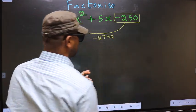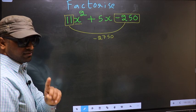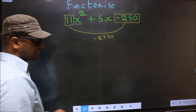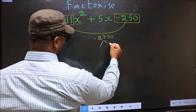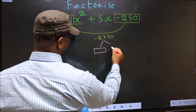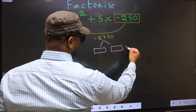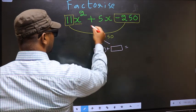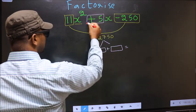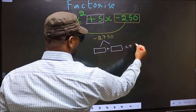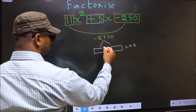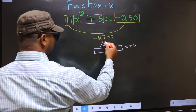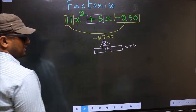This is your step 1. Next, now you should look out for two numbers such that when you add these two numbers you should get middle coefficient +5, and also when multiplied you should get -2750.